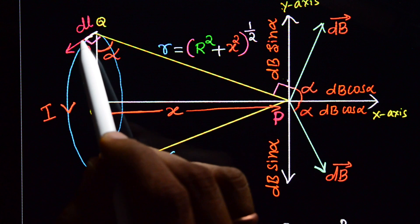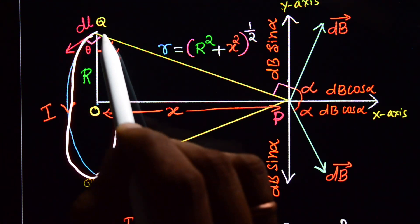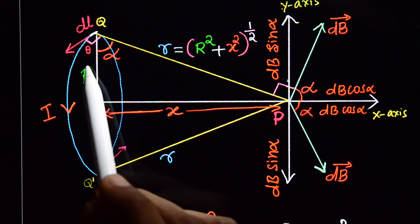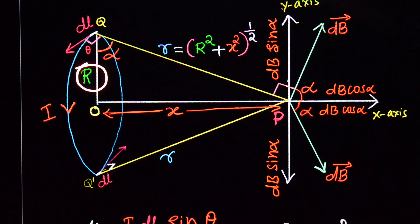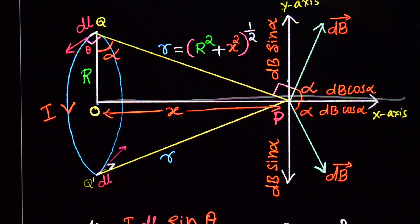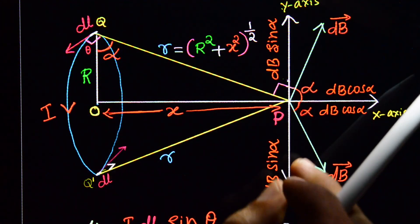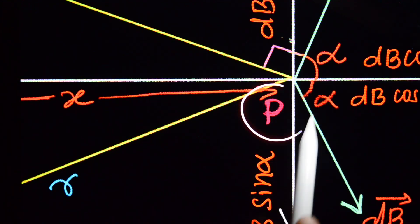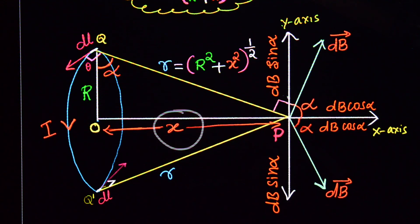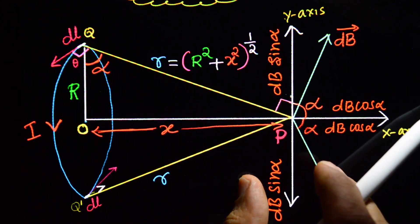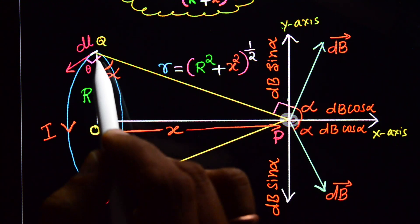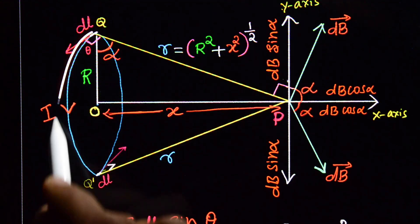Here we have a circular loop that carries current I. The radius of the circular loop is R. Here is the axis of the circular loop. On the axis there is a point P which is at a distance X. We need to derive an expression for the magnetic field at this point due to a current-carrying circular loop.